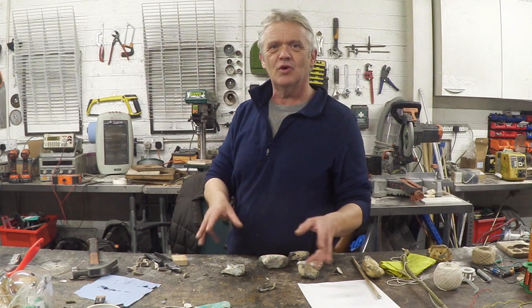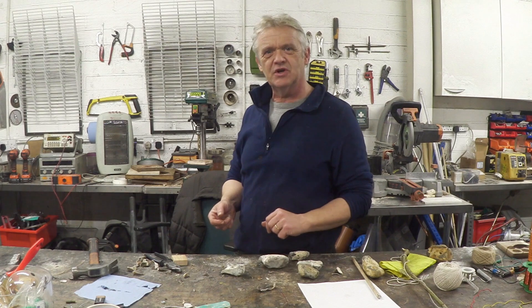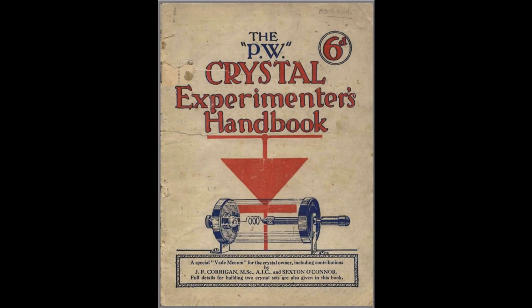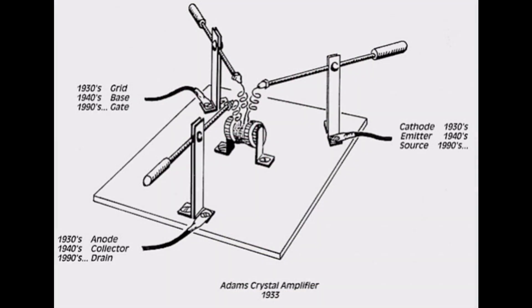I've put a link to this book in the description. This is the PW Crystal Experimenters Handbook, first published in 1925, and I've included it because it gives the background on this device — the Adams Crystal Amplifier, also known as the Lost Transistor.